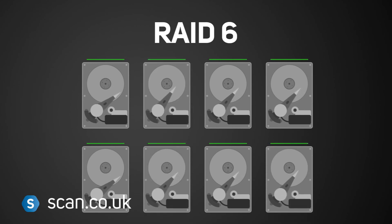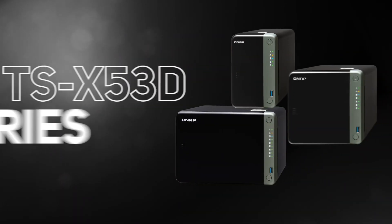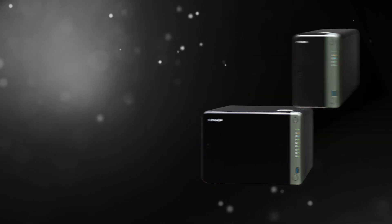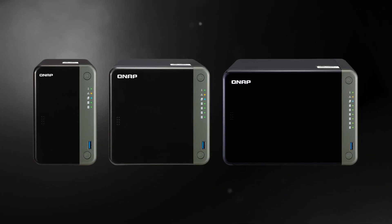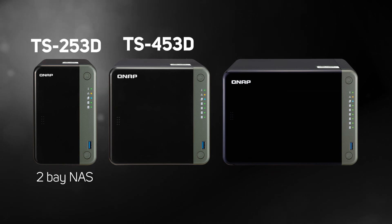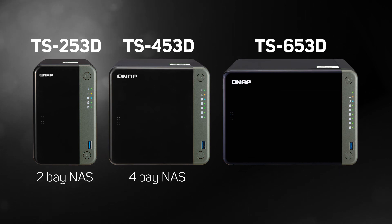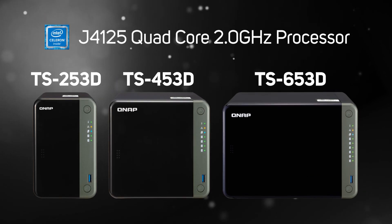QNAP have been around since 2004 and are one of the market leaders in reliable networking products for home and business. Their latest range of NAS devices is the TSx53D series. The range consists of three options: the TS-253D, which is the two-bay NAS; the 453D with four bays; and the 653D, which is of course the six-bay NAS. In this series, they all feature an Intel Celeron